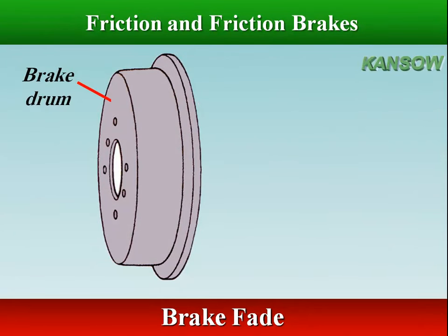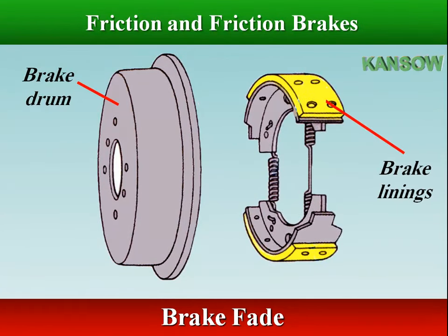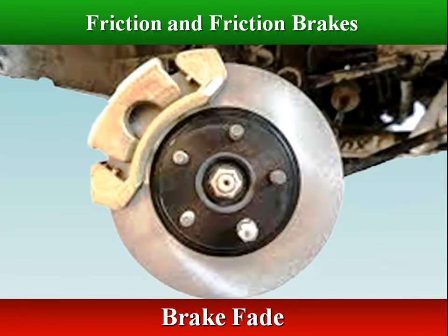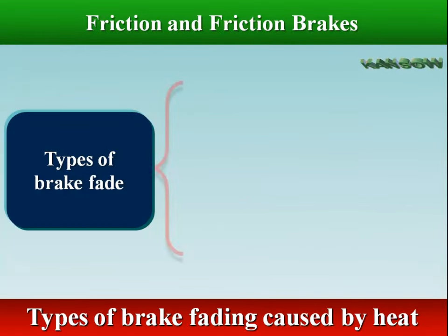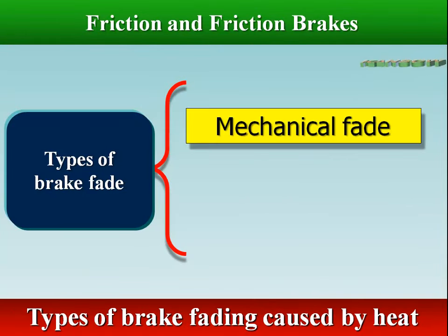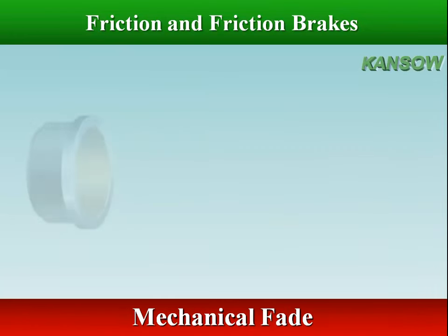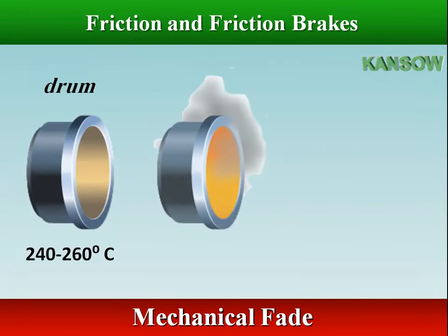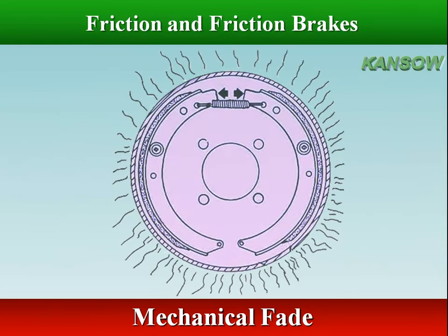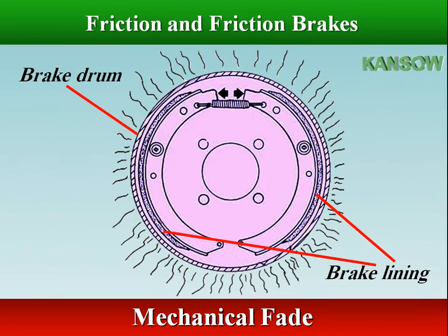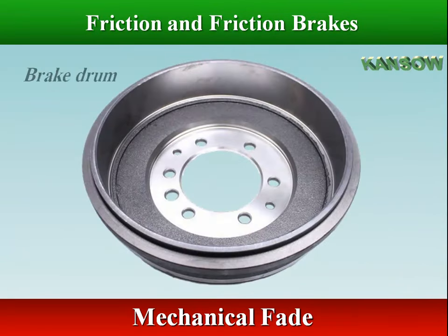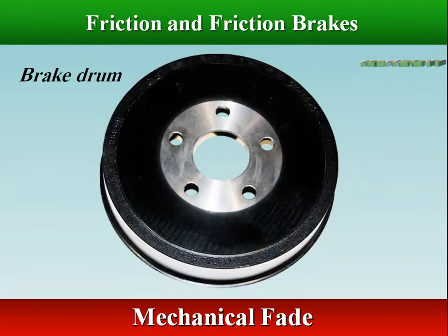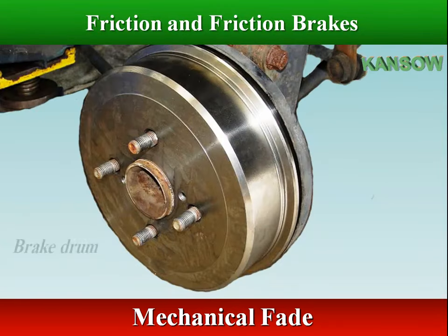Brake drums and rotors are forced to absorb a significant amount of heat during braking. Brake fade describes a condition where heat is generated at a faster rate than they are capable of dissipating heat into the surrounding air. There are primarily two types of brake fading caused by heat: mechanical fade and lining fade. Mechanical fade occurs when the brake drum overheats and expands away from the brake lining, resulting in increased brake pedal travel. Mechanical fade in drum brakes is reduced by using larger or heavier drums that absorb more heat before they expand too far. Cooling fins are also added to the drums, or drums are made partially of aluminum, to help speed heat transfer to the passing air.